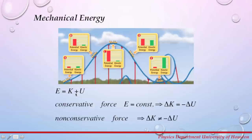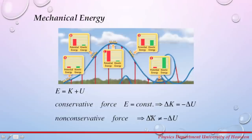The mechanical energy of a system is the sum of the kinetic energy and potential energy. If only conservative forces act on the system, mechanical energy is constant, meaning the change in kinetic energy equals the negative change in potential energy. If a non-conservative force acts on the system, ΔK will not equal −ΔU; instead, the sum of ΔK and ΔU gives the work done by the non-conservative force. An example of a conservative force is gravity; an example of a non-conservative force is friction.